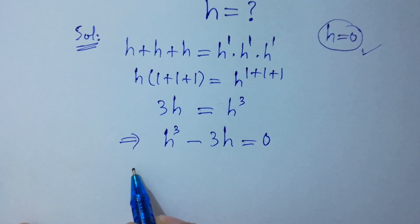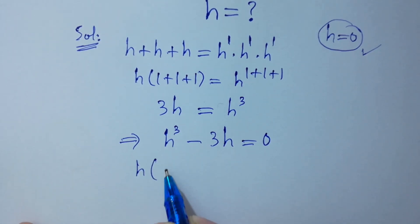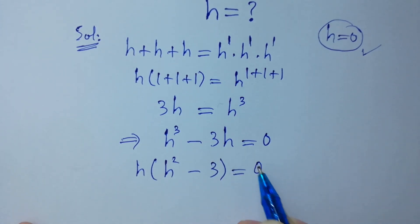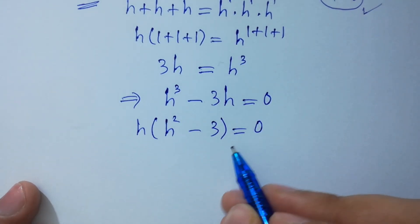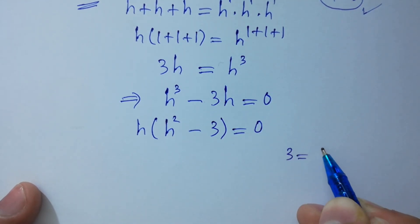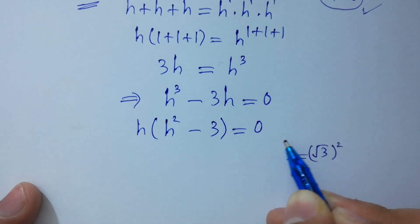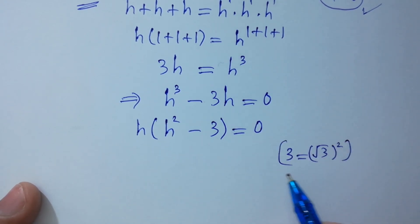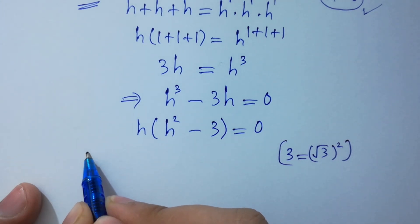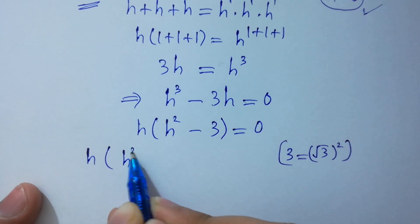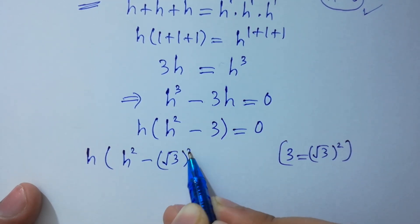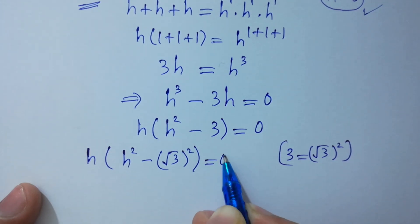This is the same as h³ minus 3h equal to 0. Taking h common: h(h² minus 3) equal to 0. Since 3 equals (√3)², this can be written as h times (h² minus (√3)²) equal to 0.